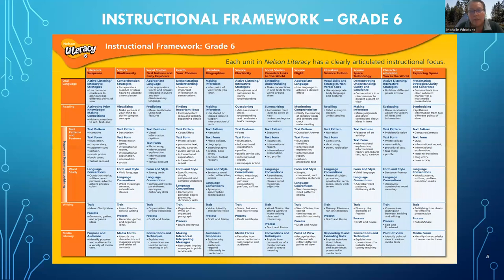The instructional framework for grade six is here. As you can see, there are different subject areas all the way across. For grade six, there are 12 units, so you have a plethora of topics to choose from. The components on the side include oral language, reading, text patterns and features, word study, writing, and media literacy. Across the top, you have your interdisciplinary components — literature, science, social studies, and health. One of the strengths of Nelson Literacy is those interdisciplinary components.